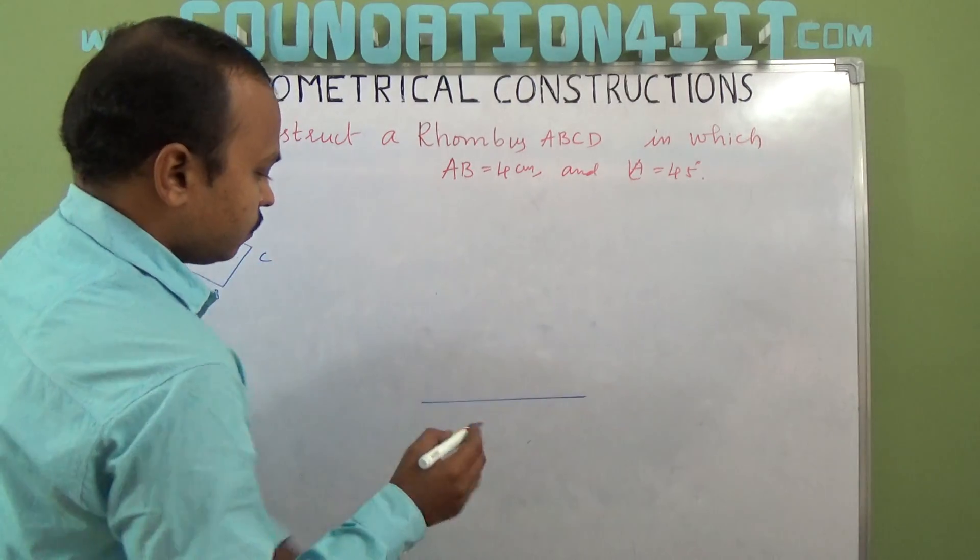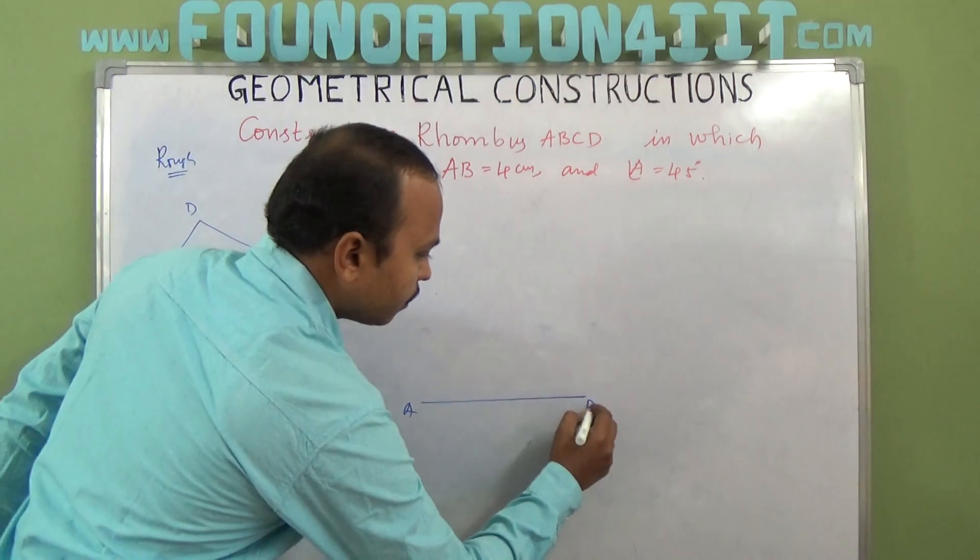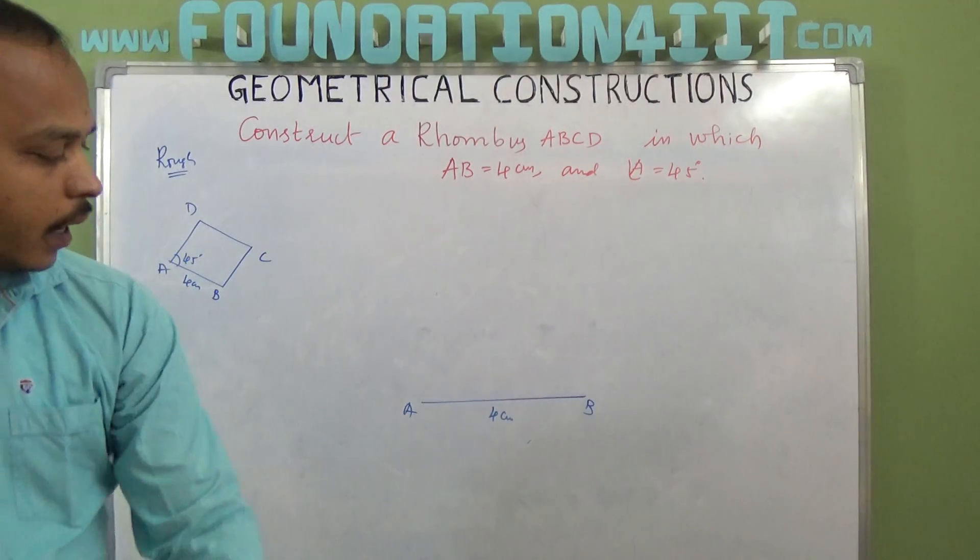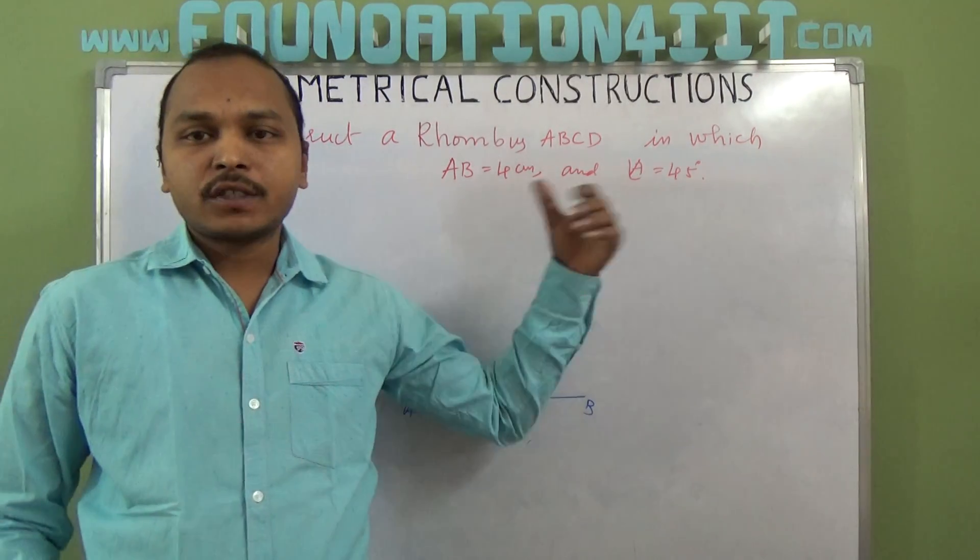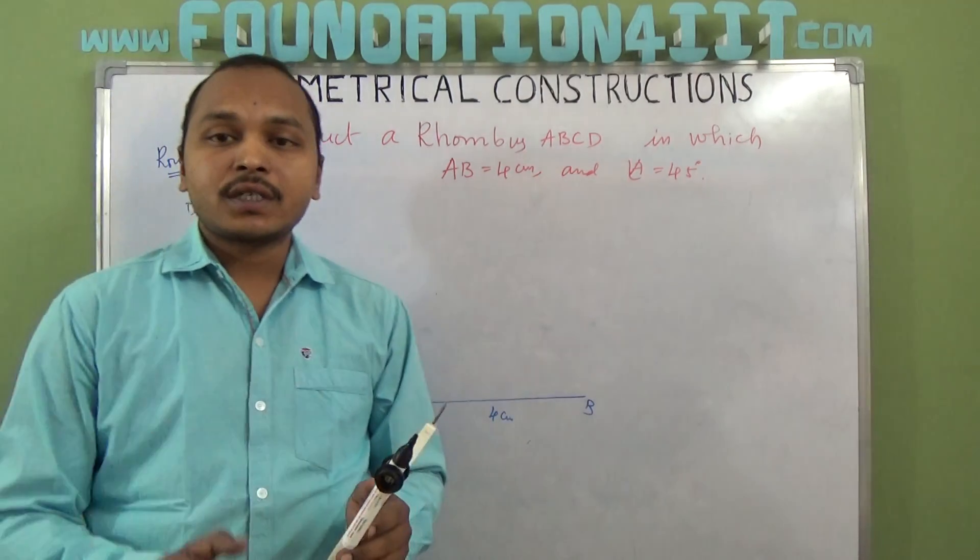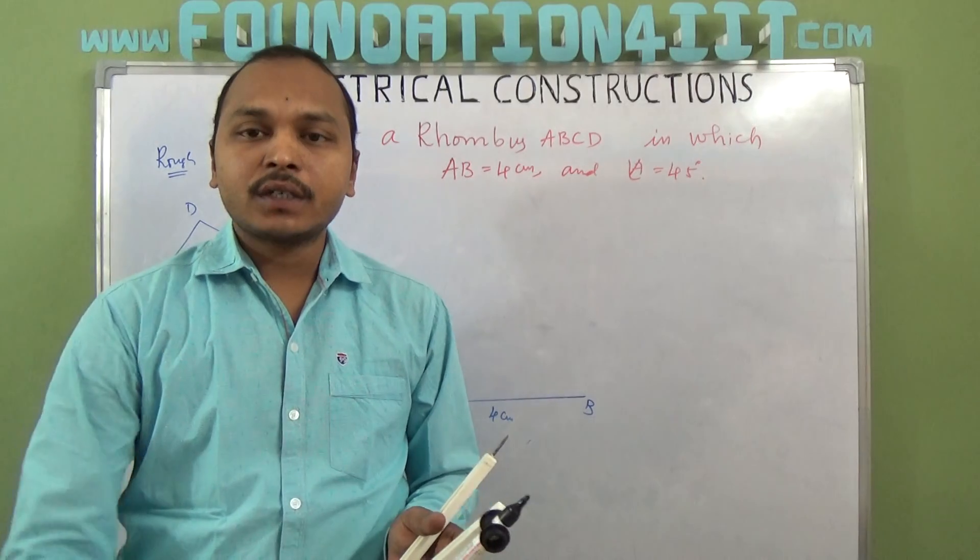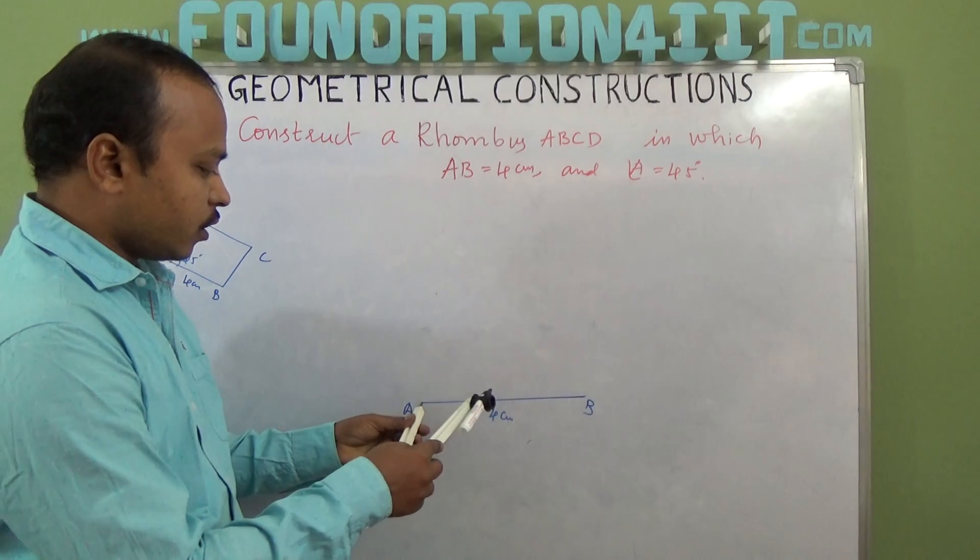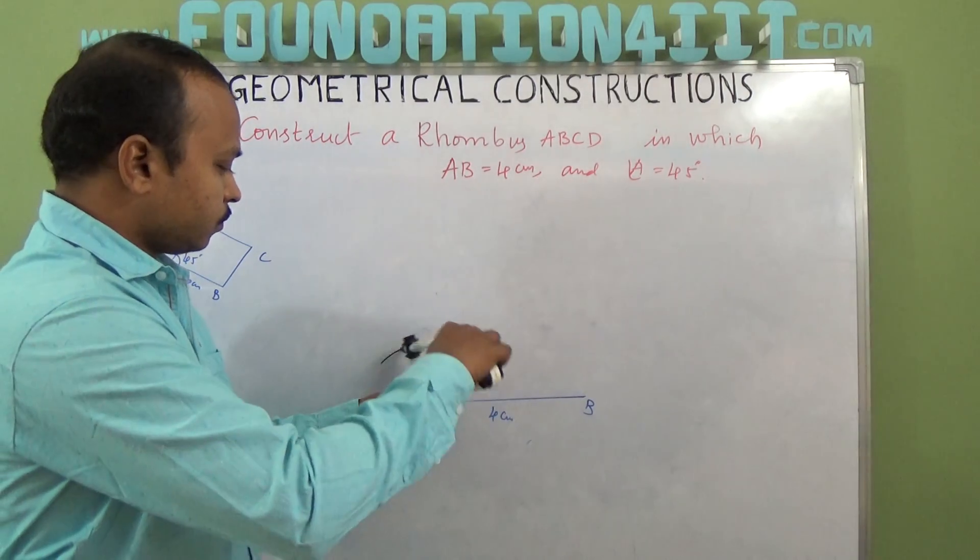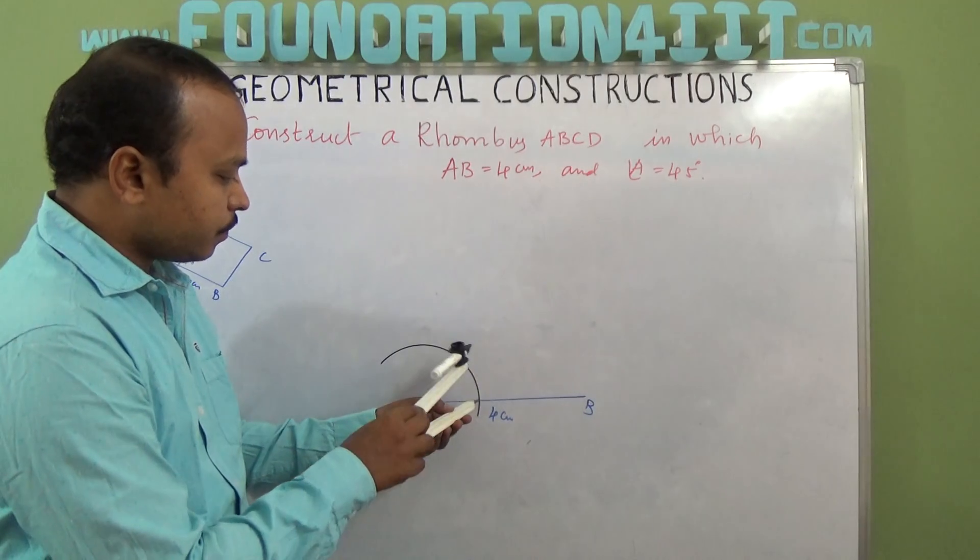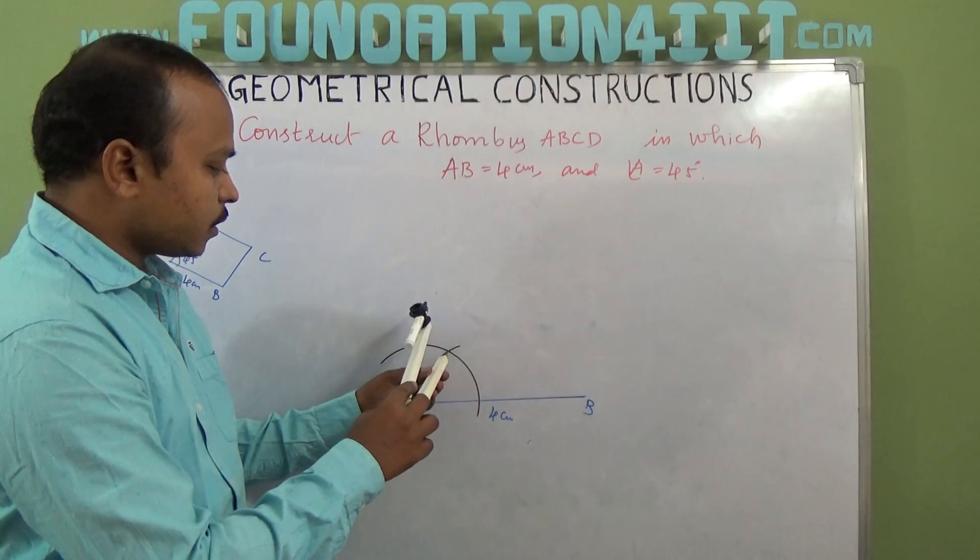Now angle A is 45 degrees. First we will start with 45 degrees at A. To construct 45 degrees we need to construct first 90 and bisect it. If you want 90 degrees, we need to draw two arcs: 60 and 120. First draw an arc from this point at 60, again from this point cut this at 120 degrees.